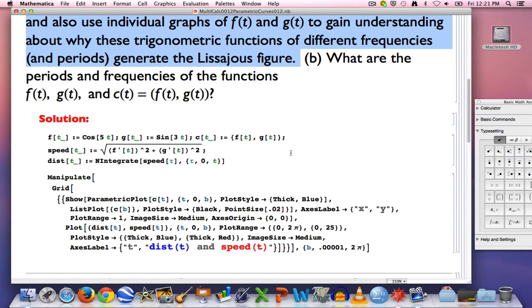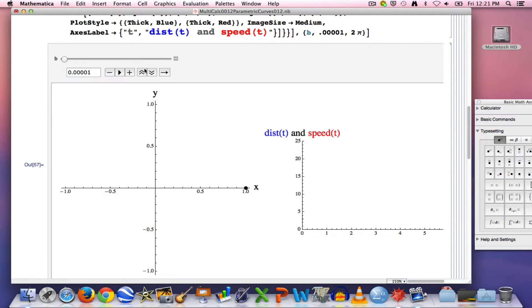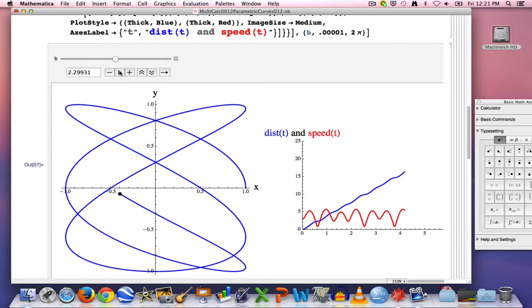So here's the basic Mathematica setup. I can enter these functions, and we can see our animation from the last video. On the left, you see the Lissajous figure being traced out. On the right, you see the corresponding distance traveled and speed functions that are showing you what's going on with the motion of the black dot as it moves around.